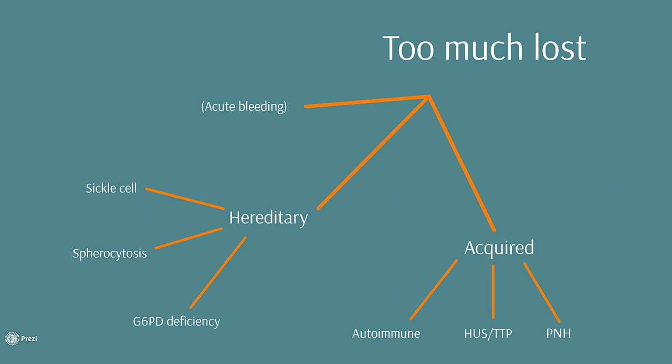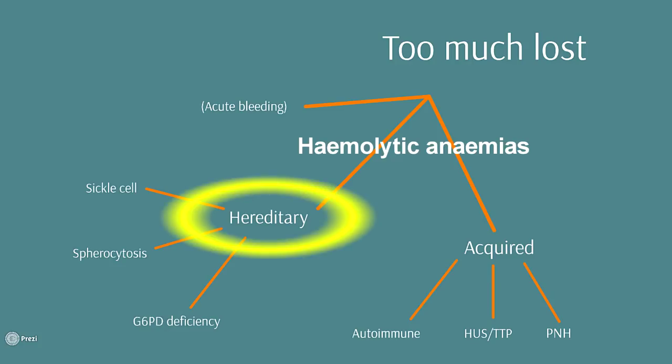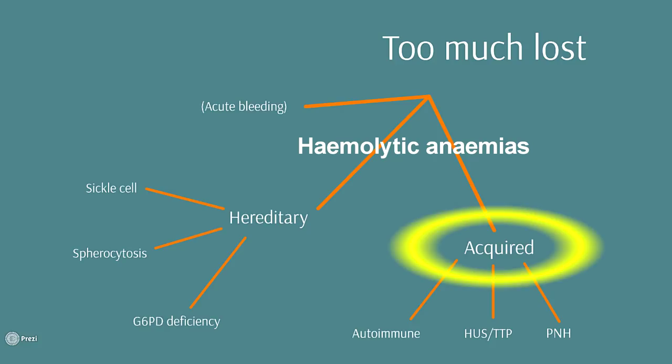Also we've got some anemias which cause red blood cells to die early. That would include acute blood loss and also a few hemolytic anemias which can be inherited like sickle cell disease, G6PD deficiency and spherocytosis, or they can be acquired. That includes things like autoimmune hemolytic anemia, TTP and HUS and also paroxysmal nocturnal hematuria.